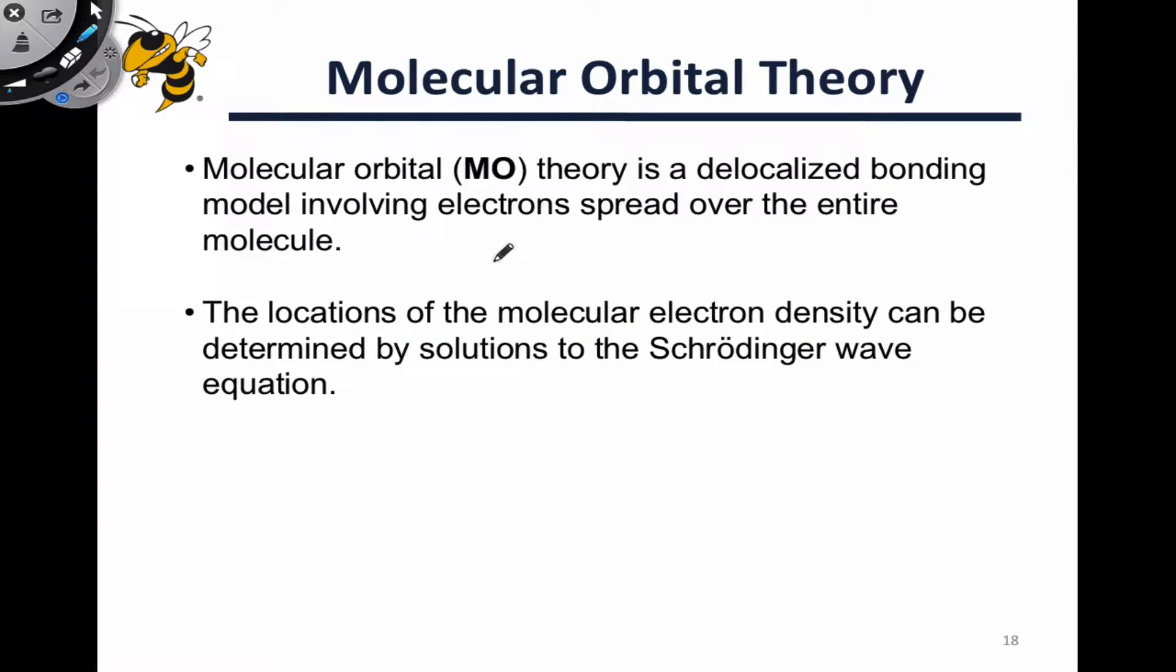We're getting ready to move into some fairly sophisticated models for how electrons behave in molecules, and to understand these molecules we need to revisit molecular orbital theory, which is an extremely important bonding theory that describes electrons within molecules. The signature idea of molecular orbital theory is that electrons are delocalized. They're spread over the entire molecule.